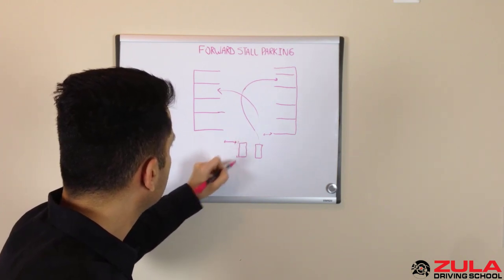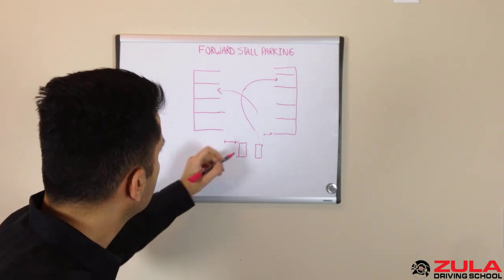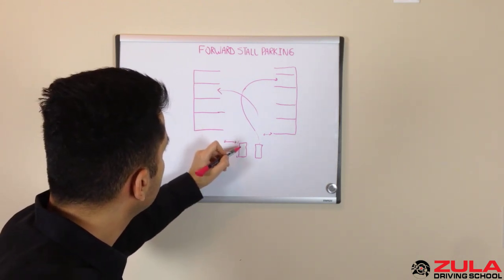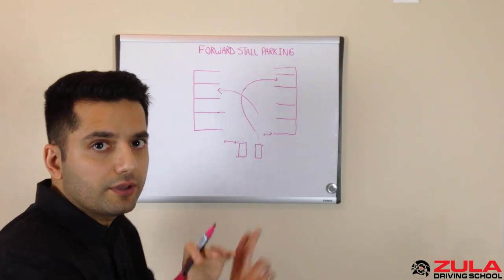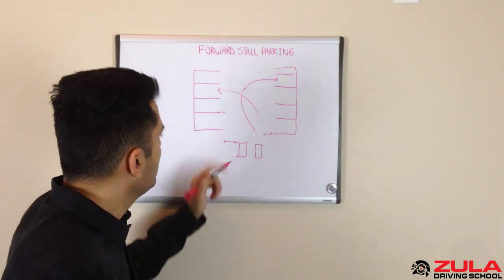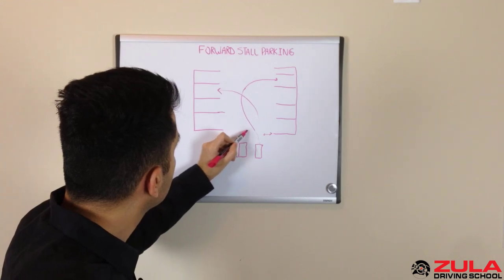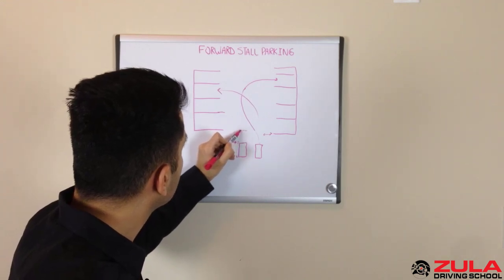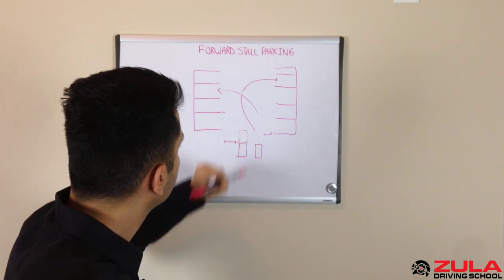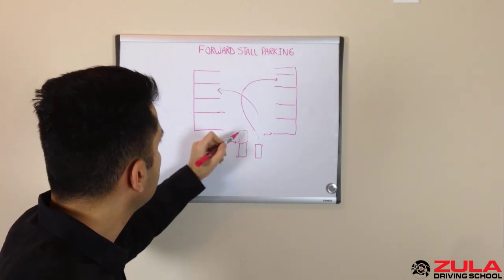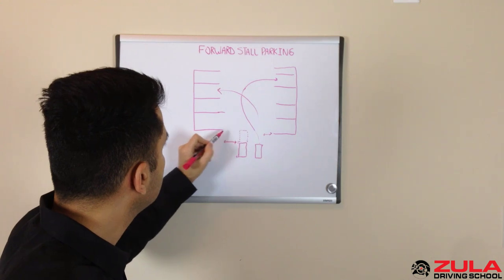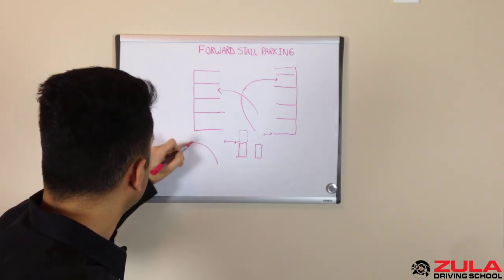You will turn your steering wheel as you're moving when the front of your car has reached this line. So you want to start turning into that stall when you're about here, and the way you can tell where the front of your car is, let me draw you...